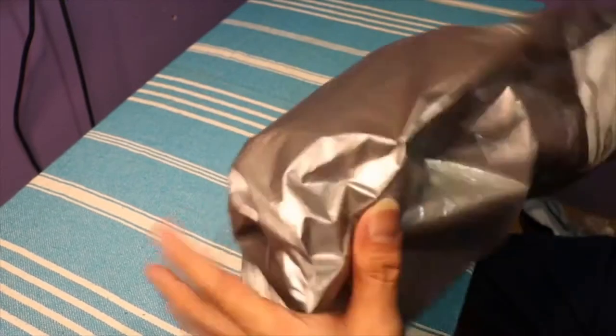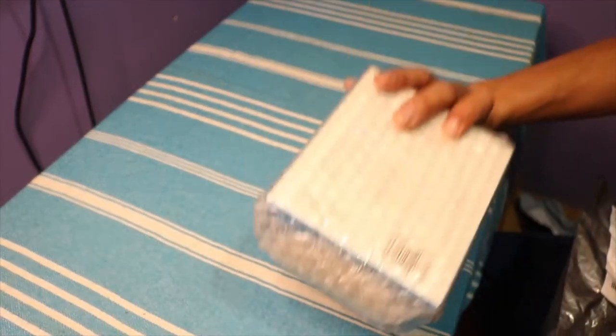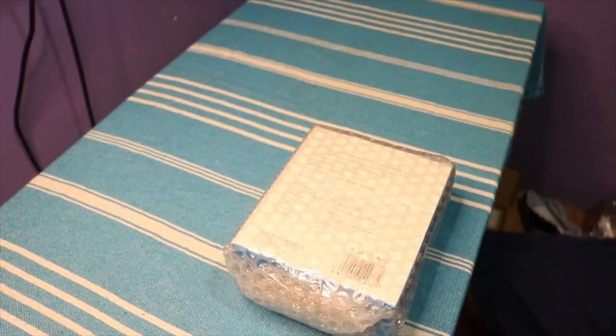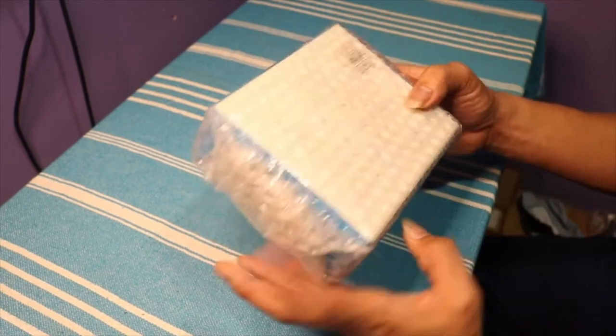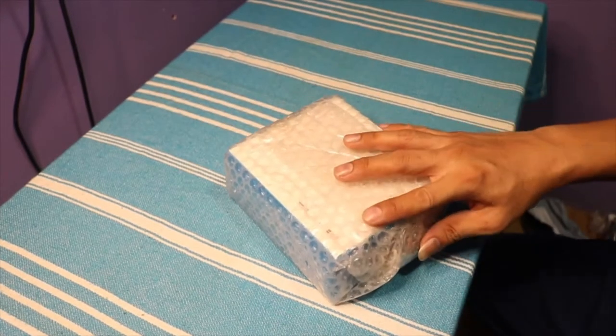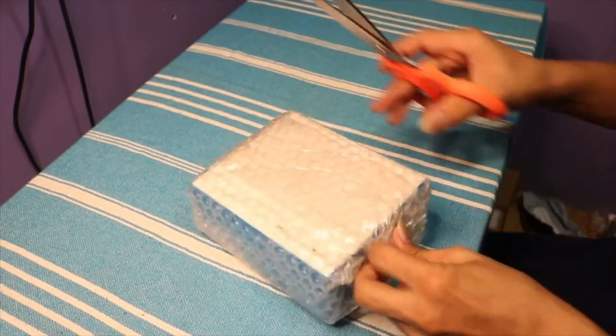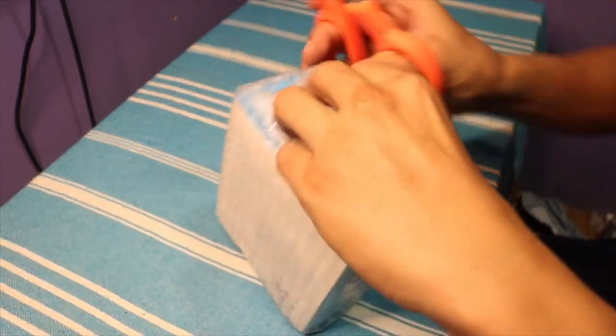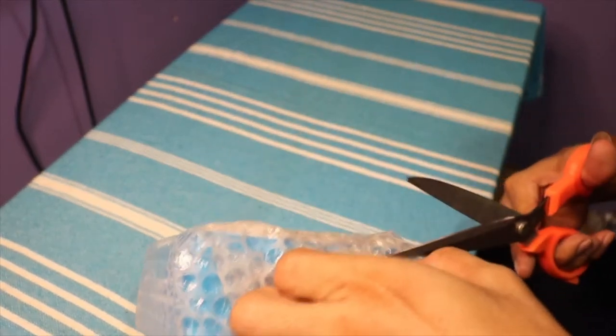So there's the large plastic packaging, and here is the product. As you can see it's wrapped in bubble wrap. Let's remove the wrapping so we can see what's inside the main box.